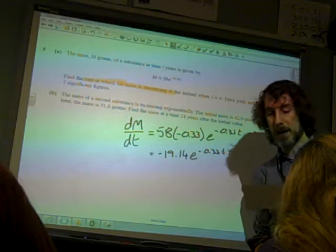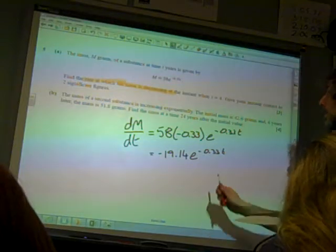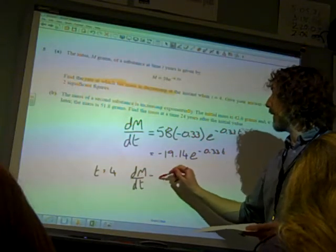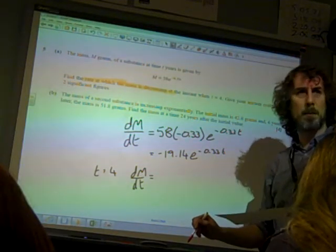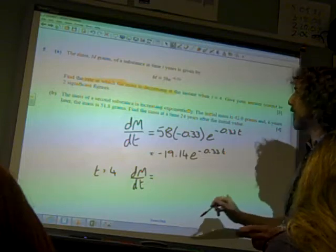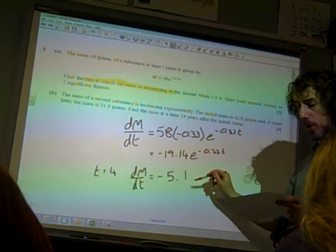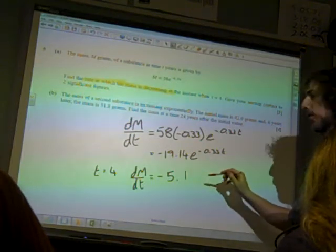So now we sub in our value of 4, and we get dm by dt is, I think it's minus 5.1. It's set to two significant figures, didn't it? So it's minus 5.1, it's 5.11 to three significant figures.